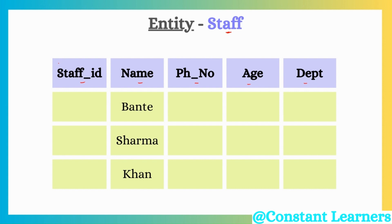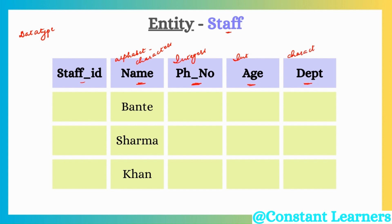What could be those integrity constraints? The first one we can declare is the data type — we can decide what type of data can be stored in that particular attribute. For example, for the name attribute, we only need alphabets, so we declare that this attribute is only going to accept characters, meaning alphabets between A to Z. If it is a phone number, we declare that it will only have integers. The age is also going to be integers. Department could be characters or a combination of alphabets and numbers. Staff ID could be a number, an alphabet, or a combination.